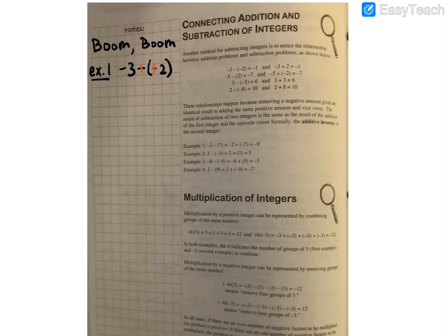And now what this problem looks like is negative three plus two. So if I use my negatives and positives, three negatives, two positives, take out my zero pairs, and that equals negative one.